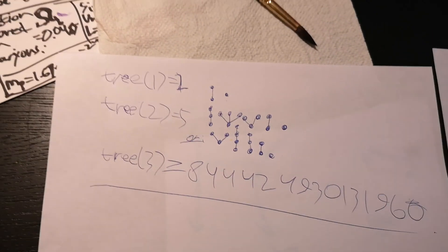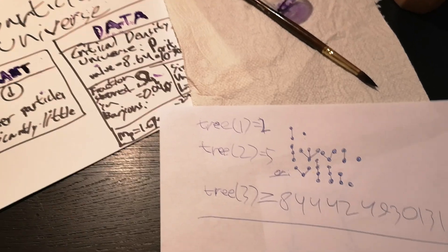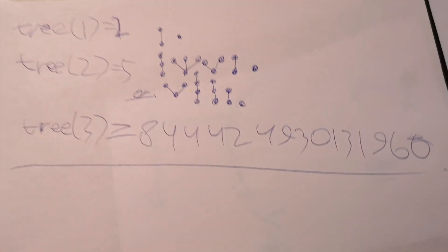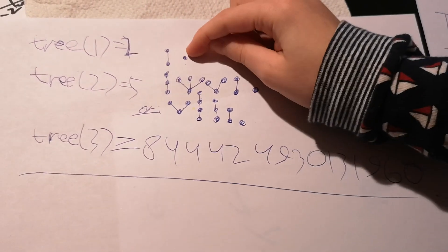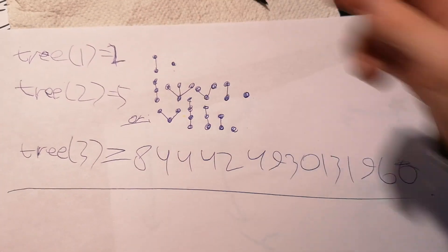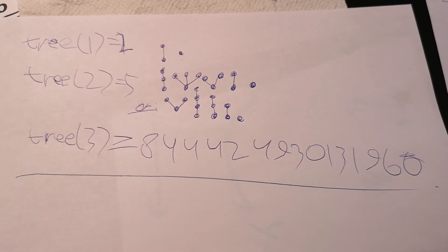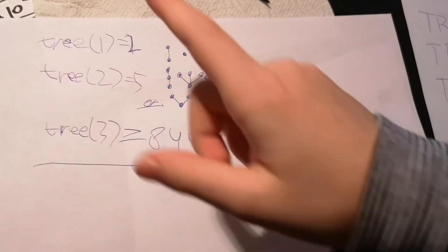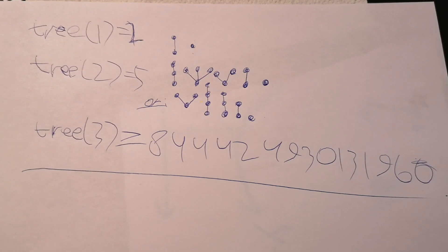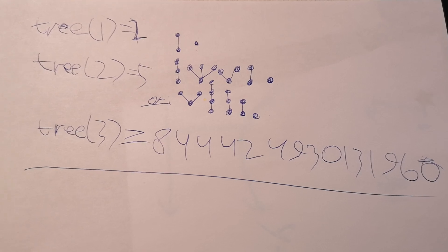Now the first rule is: the kth tree must not have more than k plus n nodes. A node is a point or vertex in the tree. Also, you can't have a tree that's contained in an earlier tree. And the weak tree function of n is the longest game you could play this way.